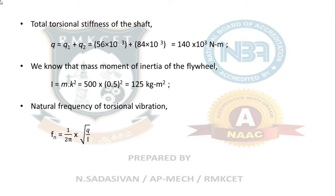Natural frequency of torsional vibration: 1/(2π)√(q/I). 1/(2π)√(q/I), where q is the total q of the two parts of the shaft, 140 × 10³, divided by I, 125. If you solve this, you will get 5.32 Hz.